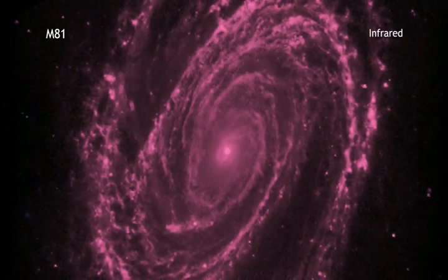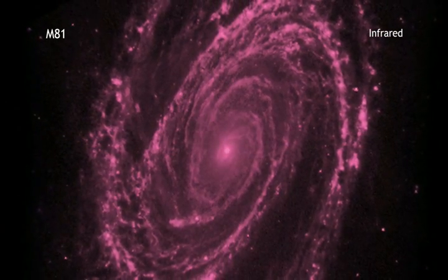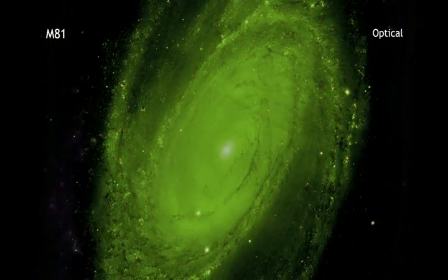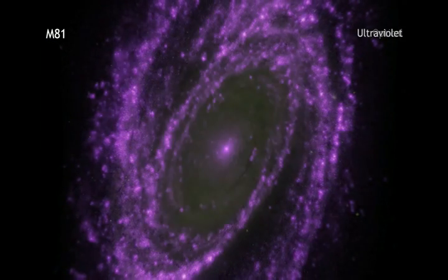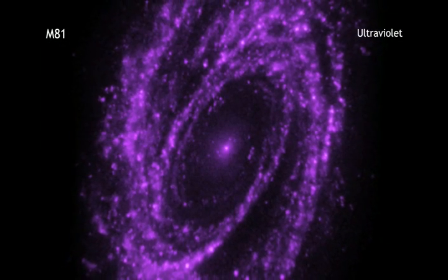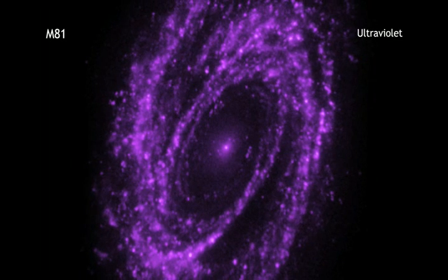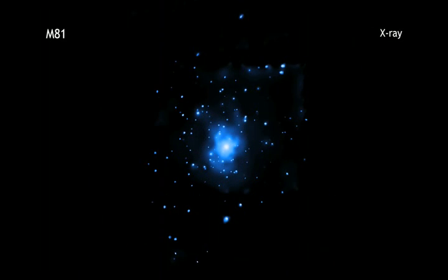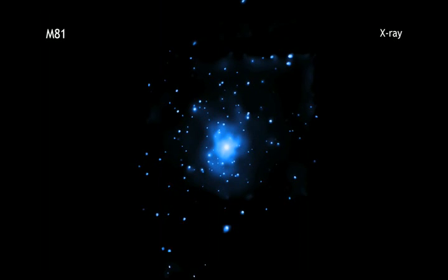First, we see infrared data from the Spitzer Space Telescope, followed by optical data from the Hubble Space Telescope. The GALEX satellite shows us what M81 looks like in ultraviolet emission. And finally, X-ray data from the Chandra X-ray Observatory reveals what is going on at higher energies.